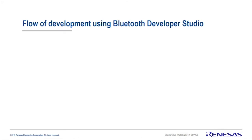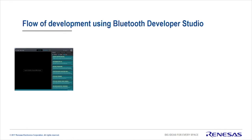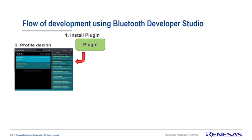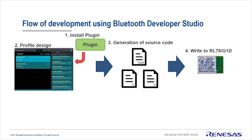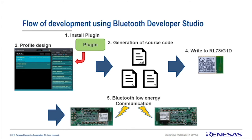Source code for the RL78G1D can be generated with Bluetooth Developer Studio by following these three simple steps: install the plugin provided by Renesys, design the service, and then generate the code. By incorporating this output code in the BLE protocol stack and building it, it is possible to easily generate and use a custom BLE profile.